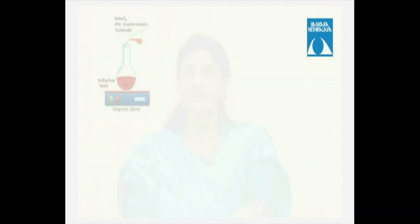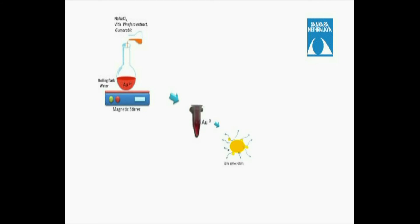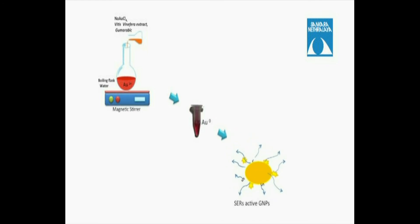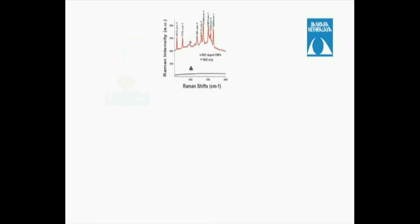The gold nanoparticle synthesis using fruit extract is a very simple and rapid process. These particles are synthesized using vitis vinifera extract as a reducing agent and gum arabic as a stabilizing agent. The particles are characterized by XRD for crystallinity and TEM to know the size and shape of the particle.